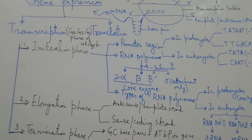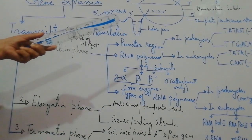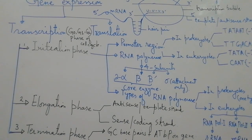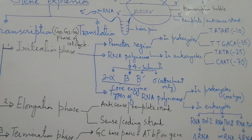In the initiation phase, transcription begins when RNA polymerase binds itself with a particular region called the promoter region. The promoter region is present before the location of the actual gene. In prokaryotes, there are two binding sites in the promoter region: TATA (also called the -10 sequence) and TTGASA (also called the -35 sequence). In eukaryotes, the two binding sites are the TATA box (-25 sequence) and CAT (-70 sequence).